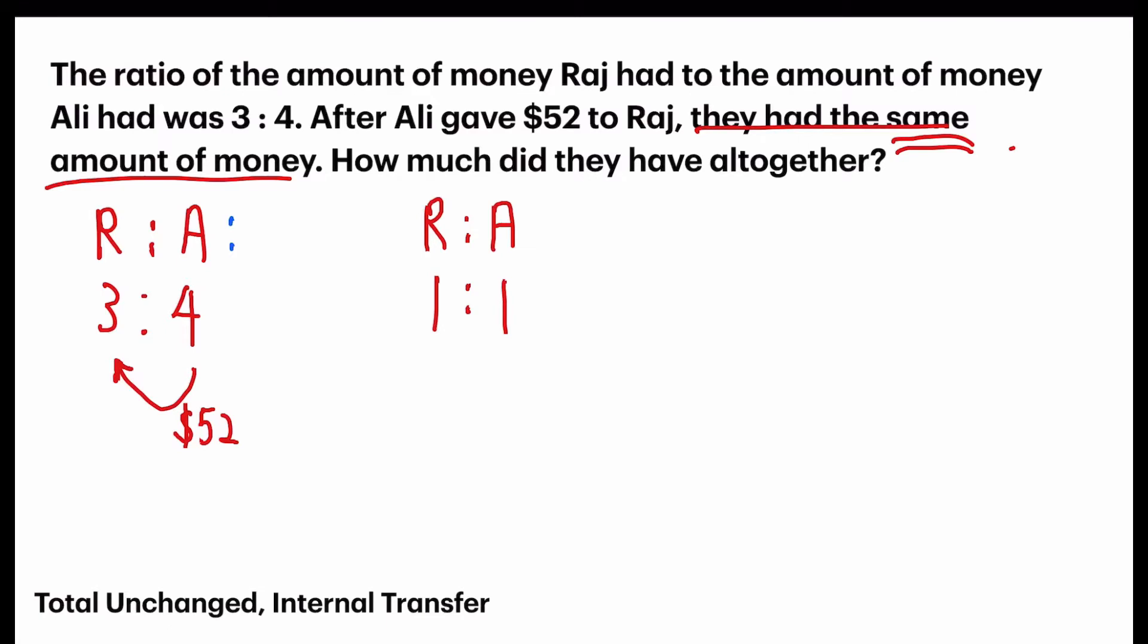So, let's look at the first set of ratio. I'm going to include this total column. And how many units are there? 3 plus 4, I have 7 units. So, since there is an internal transfer, the total should remain unchanged for the other set of ratio. But, check it out. There's only 2 units. Which means, total of 7 and 2, they should be the same. We are going to make a common multiple out of these 2 numbers. 7 and 2, we have 14.